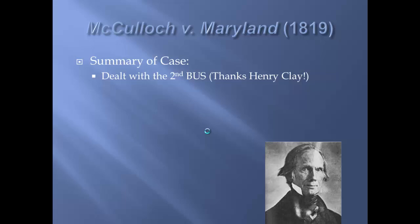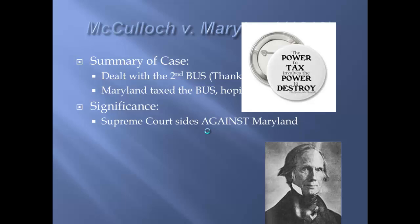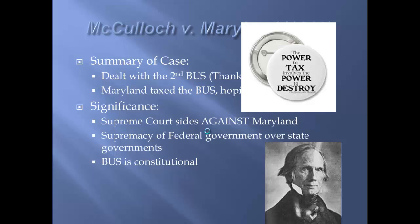16 years later, we have McCulloch versus Maryland. This case dealt with the second Bank of the United States, Henry Clay's brainchild. The state of Maryland did not like the Bank of the United States, so they wanted to tax a branch of it, hoping to destroy the bank. The bank sued Maryland and the Supreme Court sided against Maryland. John Marshall said, 'The power to tax involves the power to destroy.' This helped establish that the federal government is supreme over state government. The Supreme Court also had a chance to declare the Bank unconstitutional and did not — so the bank is constitutional.